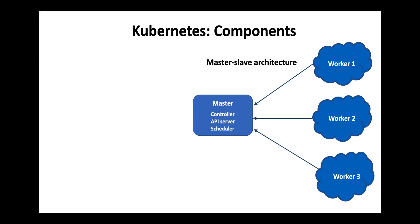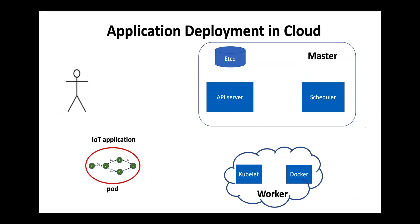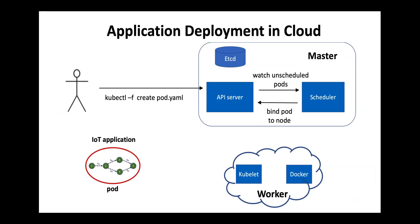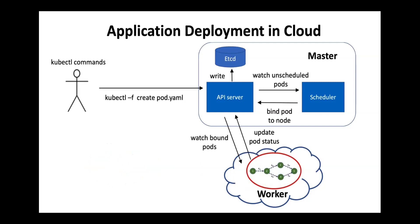The main basic control and management unit of Kubernetes is a pod. The circles in this figure indicate pods deployed on the worker nodes. A pod is defined as a YAML file which consists of references to one or more Docker images, which are pulled from the Docker registry. For application deployment in the cloud, the user sends a kubectl command to create a pod on the Kubernetes node. This request is sent to the master API server. The scheduler on the master node watches for the newly created pod and binds it to a worker node that satisfies the pod requirements. The API server writes this binding to the database, and then the Kubelet at the worker node watches for the binding and starts running the pod. The status of the running pod is then updated to the master node.